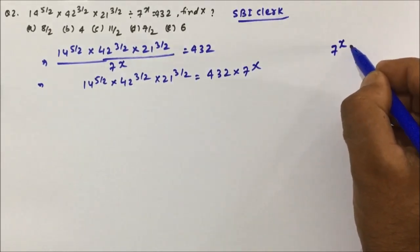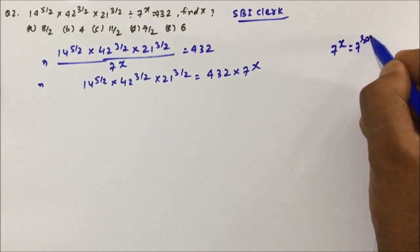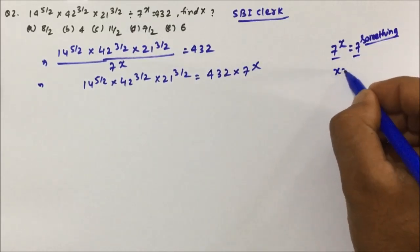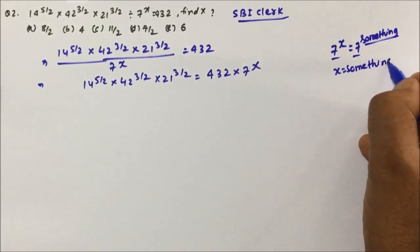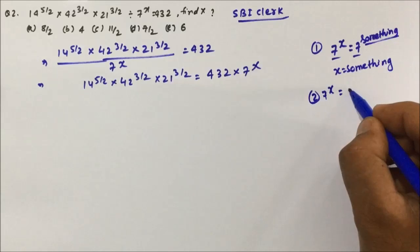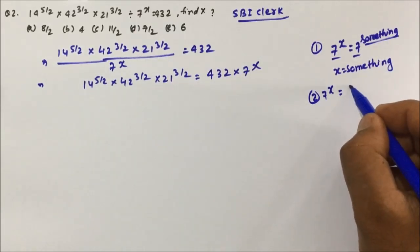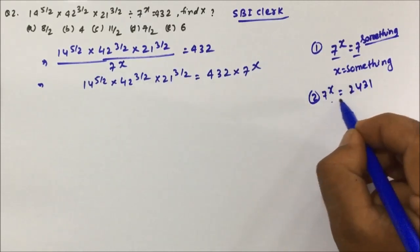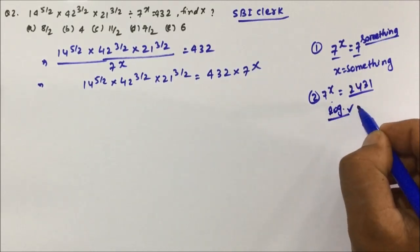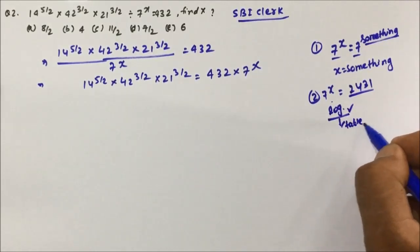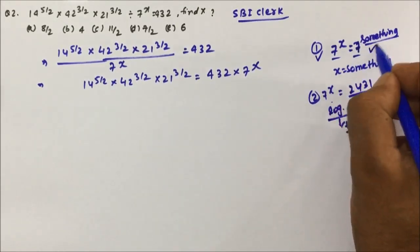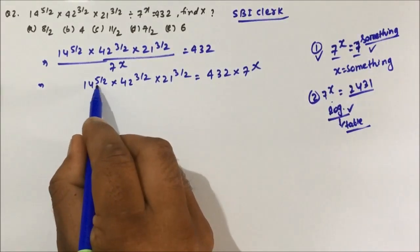To calculate 7^x, the right-hand side must also be expressible as 7 to the power of something — when the bases are the same, we can equate the powers and find x. If the right side were a number not a multiple of 7, we'd need logarithms, which aren't given in exams. So, we look only for the powers of 7 on the left side.